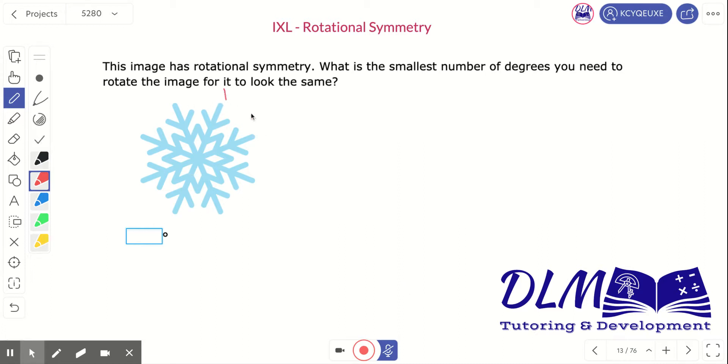So, I count again. One, two, three, four, five, six, seven, eight. So, I divide 360 by 8 to find my answer.